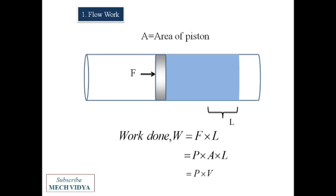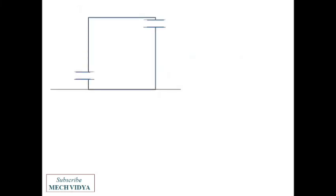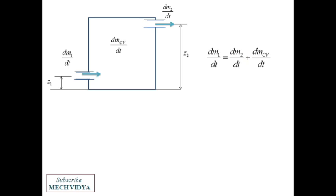Now we will start the derivation. Let me suppose that I have a control volume, that is an open system which has inlet and outlet at Z1 and Z2 elevation. Let dm1 by dt be the mass flow rate through the inlet, and the system stores some amount of mass at the rate of dmcv by dt, and dm2 by dt is the mass flow rate coming out of the system. So I can write it mathematically as dm1 by dt equals d/dt of m2 plus d/dt of mcv.